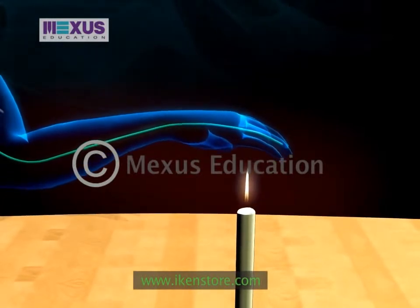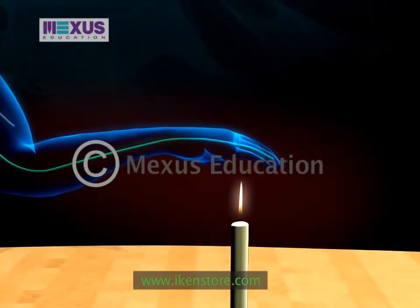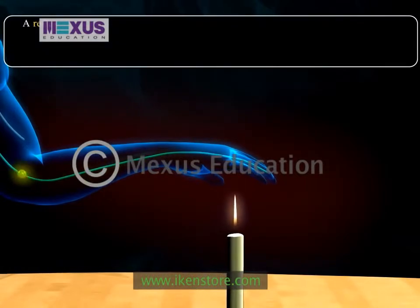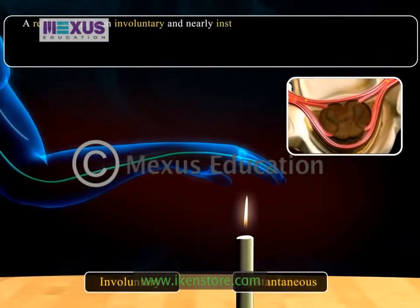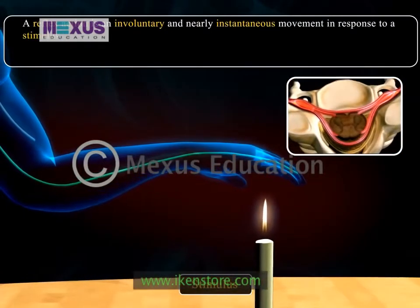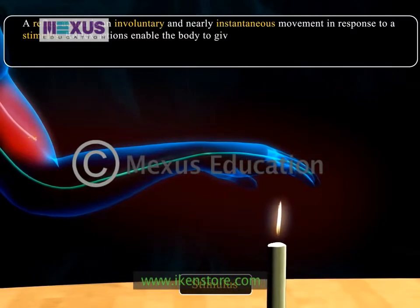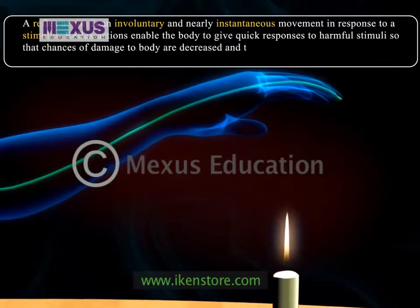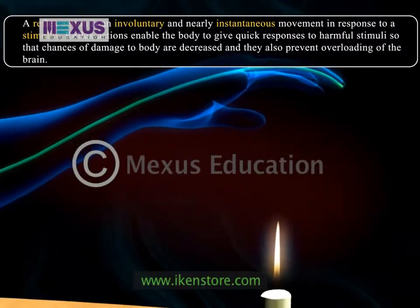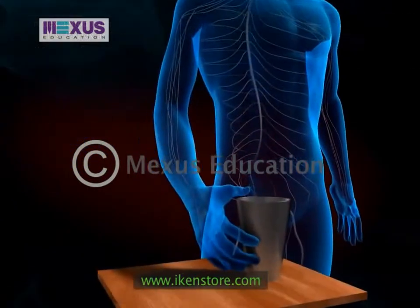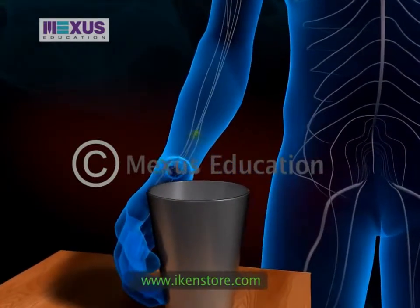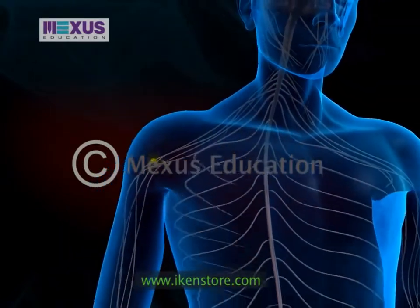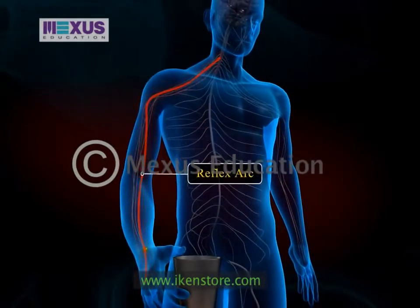Of the many kinds of neural activities, there is one simple kind in which a stimulus leads to an immediate action known as reflex action. A reflex action is an involuntary and nearly instantaneous movement in response to a stimulus. Reflex actions enable the body to give quick responses to harmful stimuli so that chances of damage to the body are decreased, and they also prevent overloading of the brain. A reflex action must be quick to have value; therefore, the pathway for receiving and sending information must be short. The anatomical pathway of a reflex is called the reflex arc.